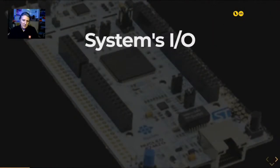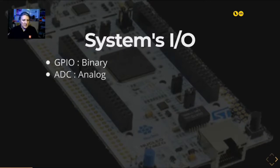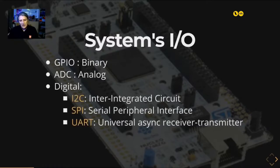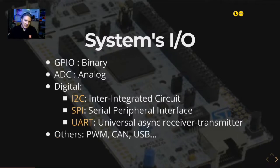Your computer system has different input-output ways to interact with the outside. For binary results, we use GPIO. For analog, we use ADC input. For digital values, we use different buses like I2C, SPI, and UART. There are also other buses like pulse-width modulation, CAN bus from automotive, USB, and other I/O standards.